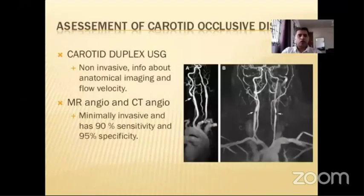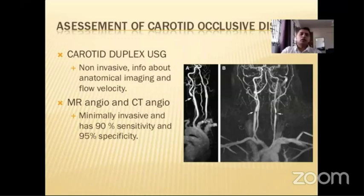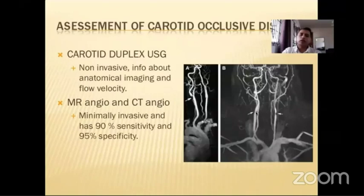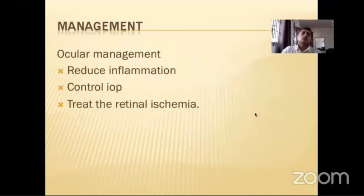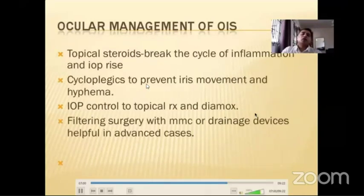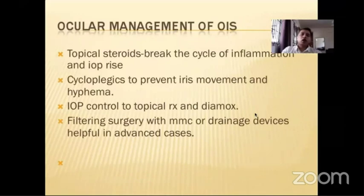ICG is helpful in showing patchy and delayed choroidal filling and delayed filling of the watershed zone. ERG and VEP show reduced b-wave amplitude, increased latency, and reduced amplitude on the photo stress test. Key clinical pointers suggesting OIS: patient older than 60 with multiple comorbidities, arriving by wheelchair, recent unilateral vision reduction, dull ocular pain, uniocular asymmetric disease, AC cells and flare, neovascular glaucoma picture, and elevated IOP. Such patients warrant high suspicion for OIS.